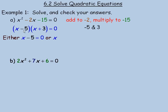We set each factor equal to 0. Setting x minus 5 equal to 0, the number that makes that true is x equals 5, because 5 minus 5 is 0. For the second factor, x plus 3 equals 0, so x equals negative 3, because negative 3 added to 3 gives 0. So negative 3 is another solution.